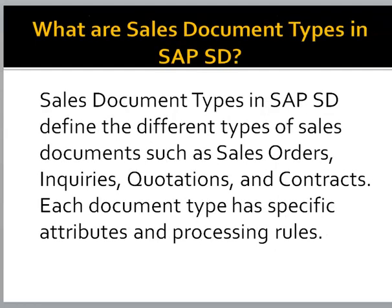What are sales document types in SAP SD? Sales document types in SAP SD define the different types of sales documents such as sales orders, inquiries, quotations, and contracts. Each document type has specific attributes and processing rules.